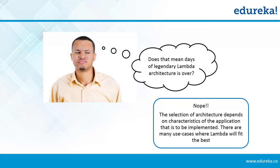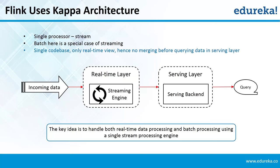Now we come to the Kappa architecture used by Flink. In Kappa architecture, there is only one layer — the real-time layer. There is no batch layer. Both streaming and batch jobs are done on the real-time layer itself. In fact, batch can be considered a special case of streaming in this architecture. Therefore, there is a single code base, only the real-time view is present, and no merging is required before querying data in the serving layer — enabling true real-time streaming.